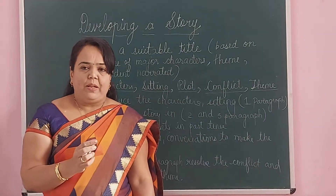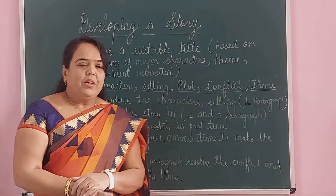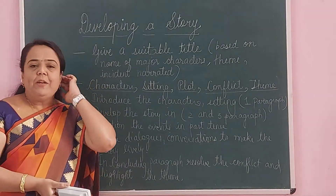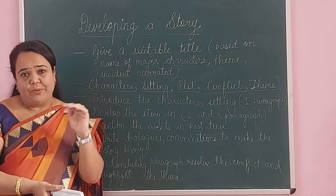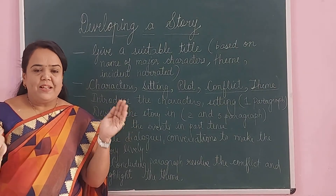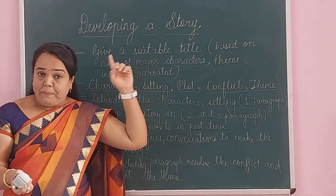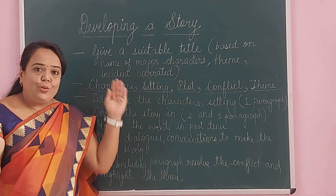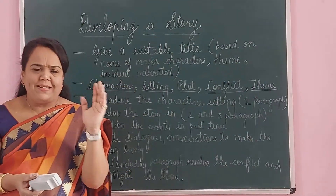So this is how you have to develop the story. You should start by giving it a suitable title. The title can be based on character, it can be based on theme, or it can be based on incidents narrated in the story. Always remember, a story is a description and experience of people and events. Whenever you are writing the story, these five things should be there: characters, setting, story or plot, conflict which is resolved at the end, and a message you can give through your story.